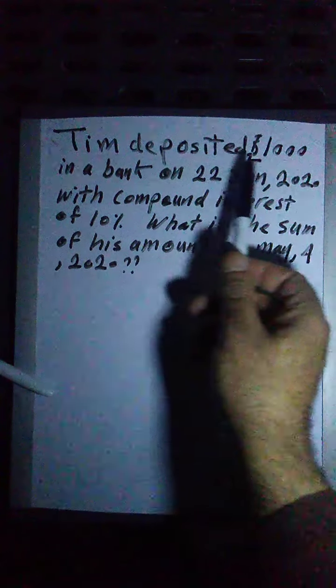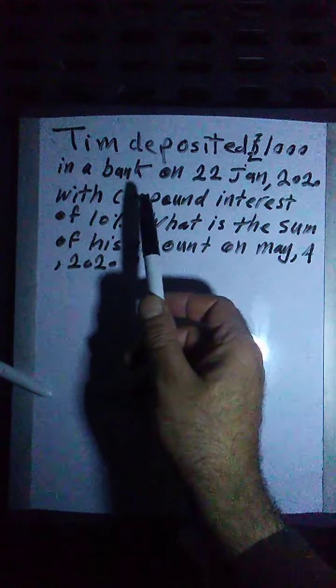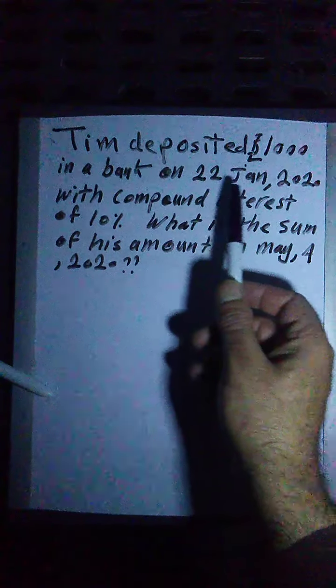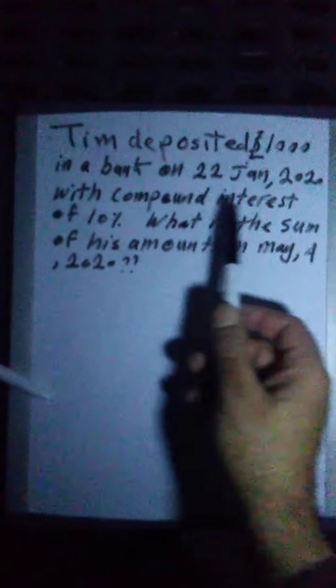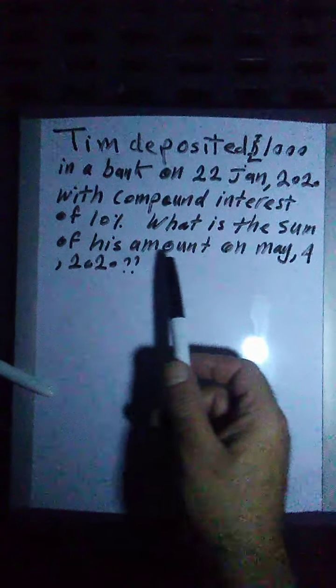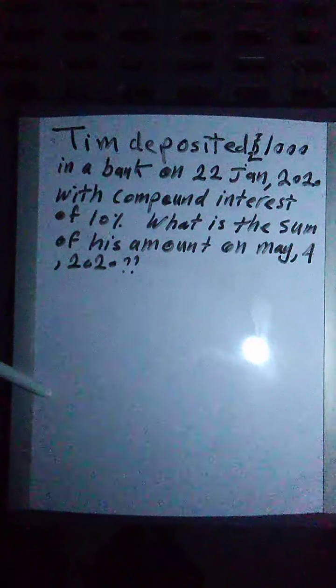We are saying Tim deposited $1,000 in a bank on 22 January 2020 with compound interest of 10%. What is the sum of his amount on May 4 from the same year, from 2020?